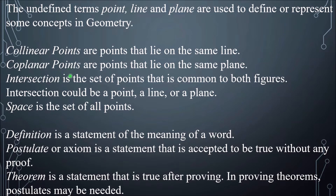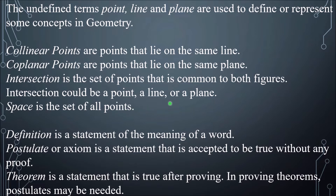Coplanar points are points that lie on the same plane. Note: collinear relates to a line, coplanar relates to a plane. Intersection is the set of points common to both figures. For example, if two lines intersect, they intersect at one point, or at infinitely many points if they are coinciding. Intersection could be a point, a line, or a plane.